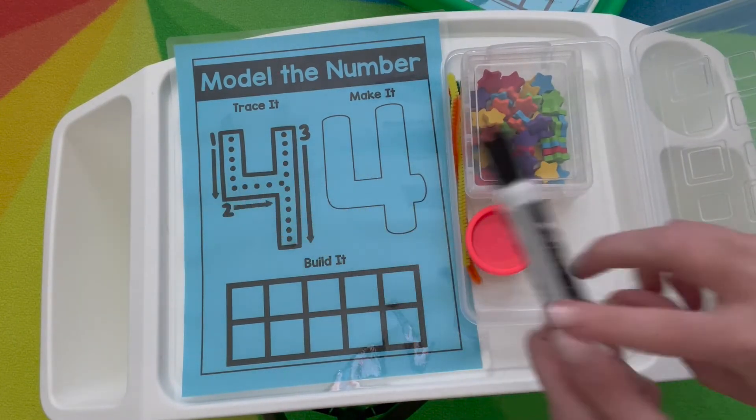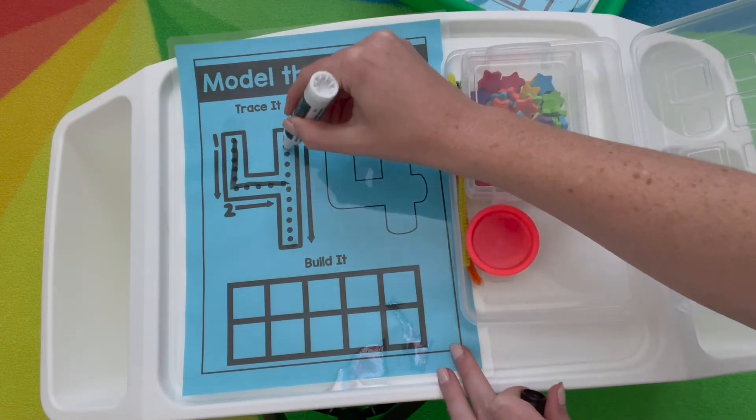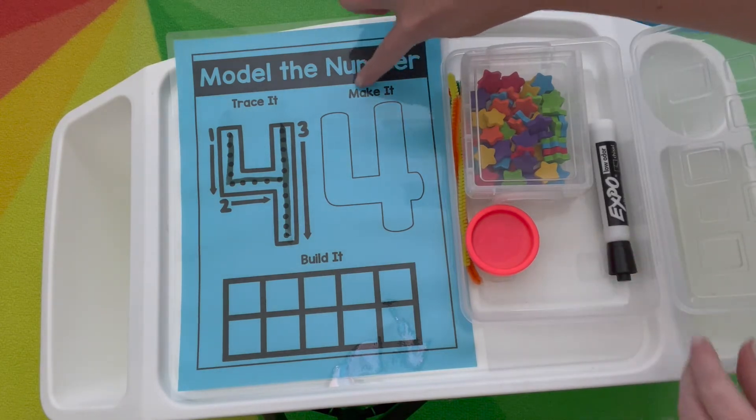So for trace it, you'll use dry erase marker. Down and across, down to the floor. That's the way you make a four.